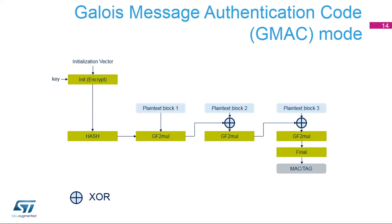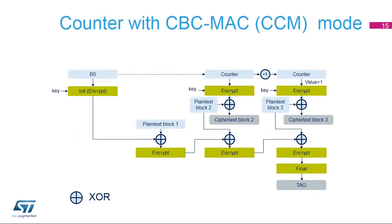Galois message authentication code, or GMAC, allows authenticating a message and generating the corresponding message authentication code. GMAC is similar to GCM, except that it is applied to a message that only contains the plaintext authenticated header. All steps and settings are the same as GCM, except that the payload phase will not be used.